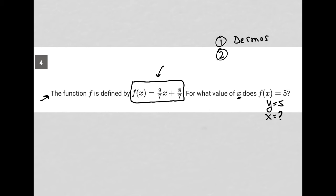Second of all, we can just do it mathematically, which shouldn't take that long either. We know that f(x) is equal to 5, so I replace f(x) with 5. I have now 5 = (9/7)x + (8/7).